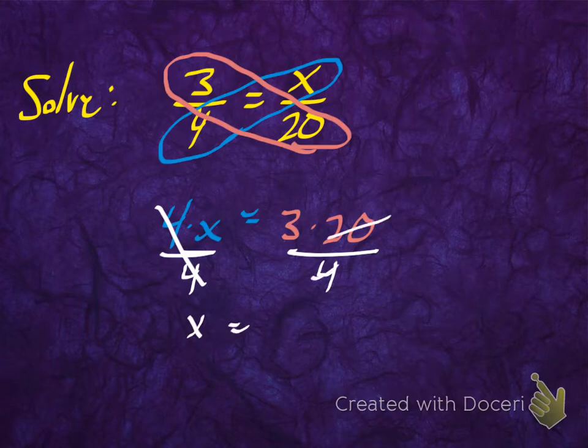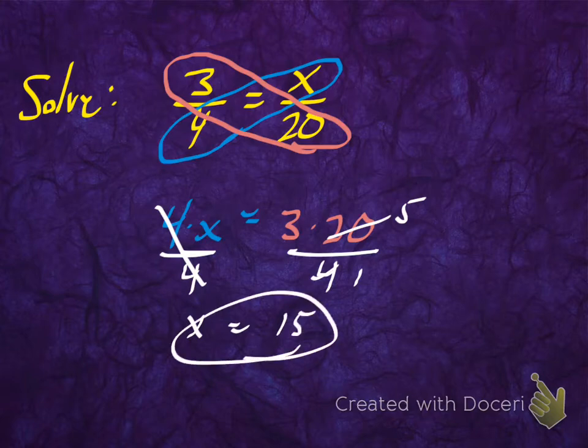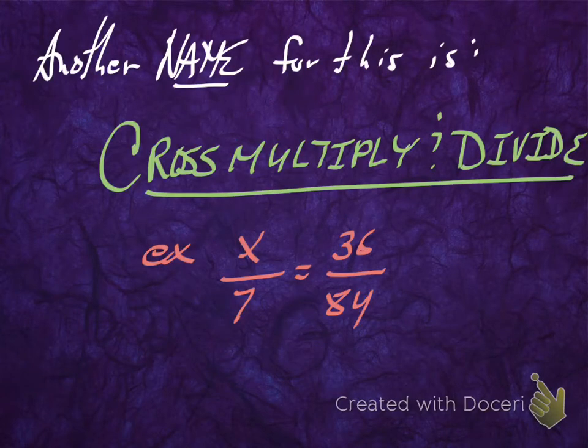So over here I get x, and the 4 and the 20 are going to cancel out nicely, and I get 1 and 5. And 3 times 5 is equal to 15 over 1, which is just 15. So that's how you solve a cross-product.